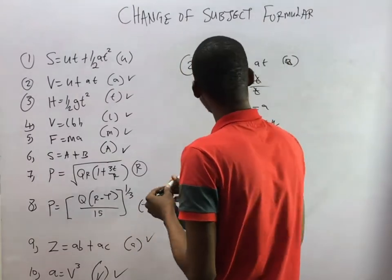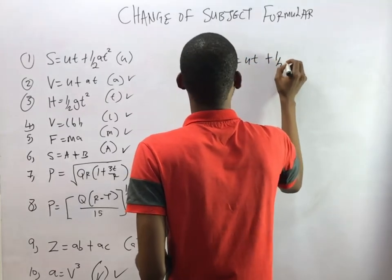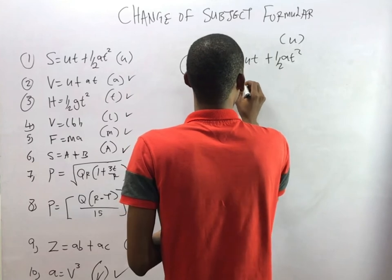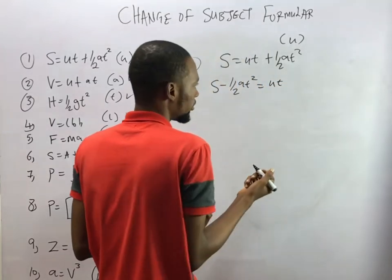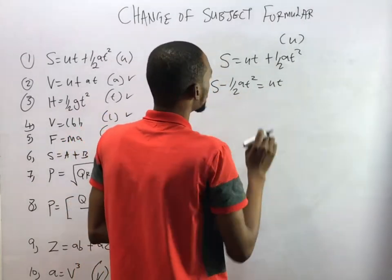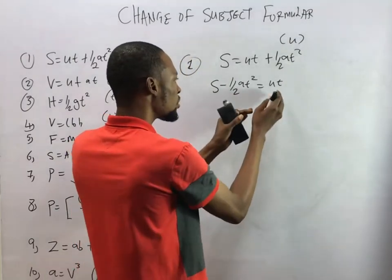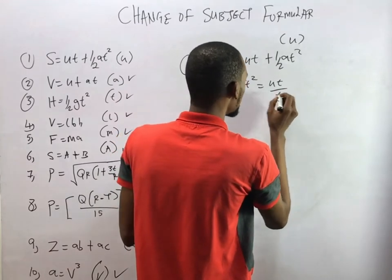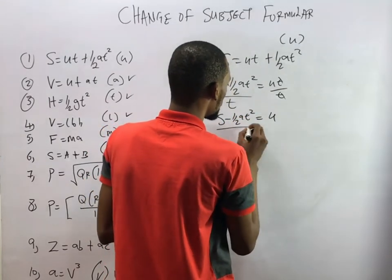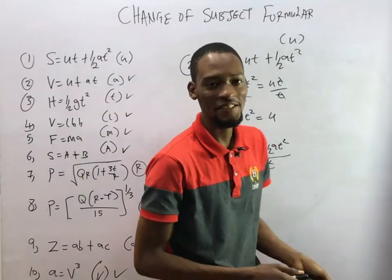Question 1 says S equals UT plus half AT squared and we need to make U the subject formula. We take half AT squared to the other side: S minus half AT squared equals UT. U and T are joined by multiplication, so we divide both sides by T. T cancels T, giving U equals (S minus half AT squared) over T.